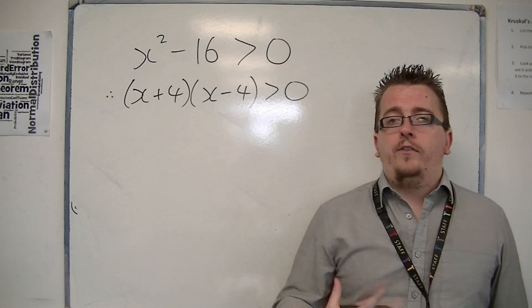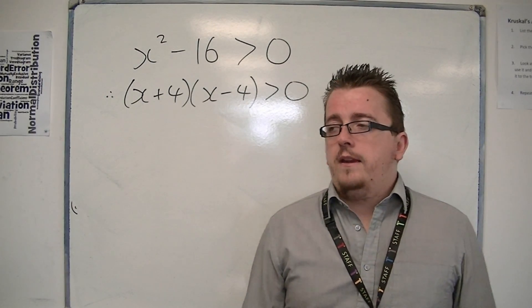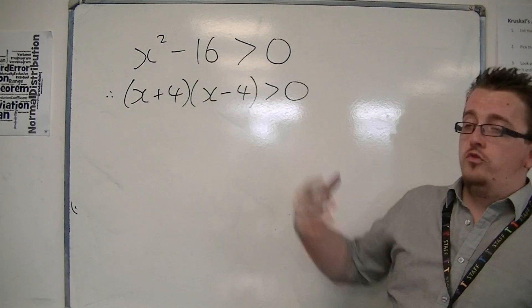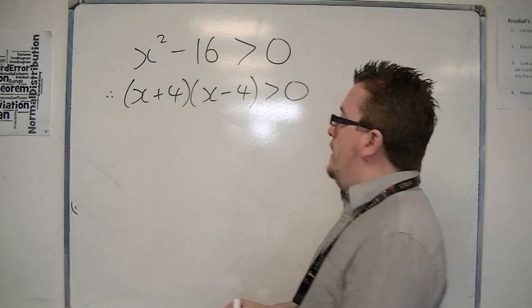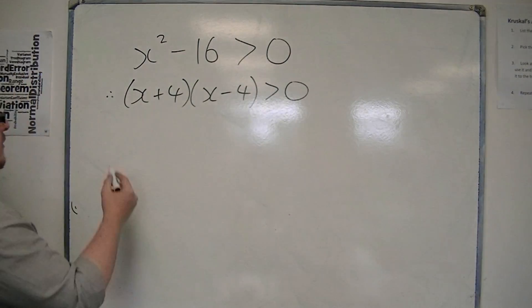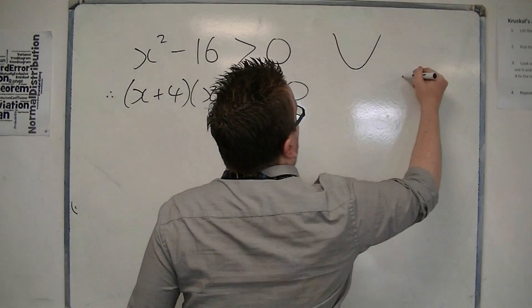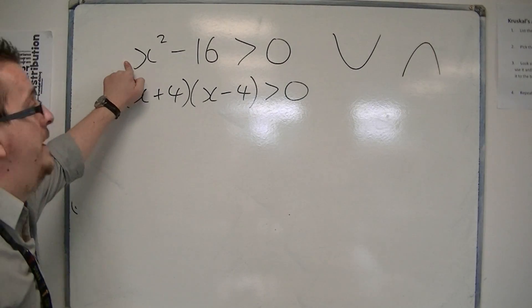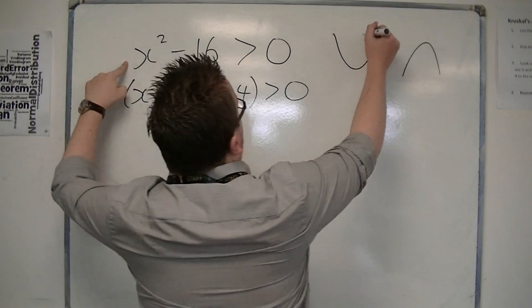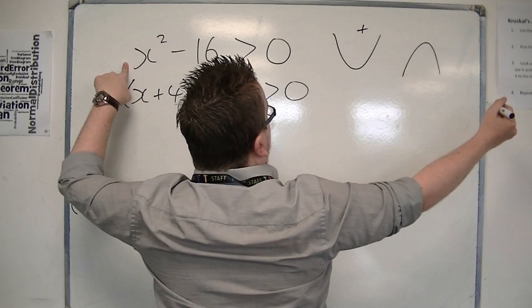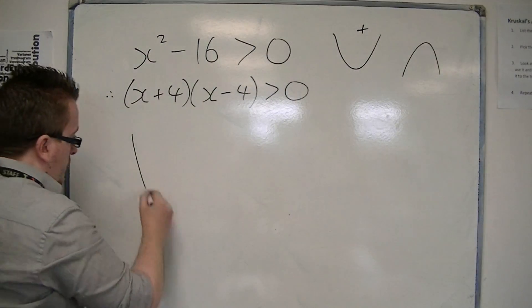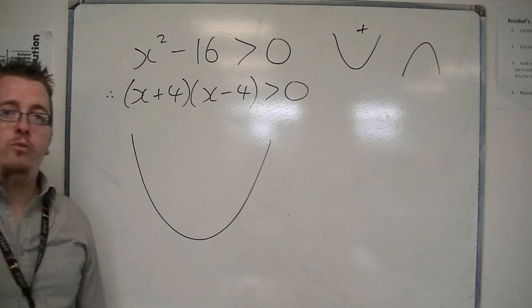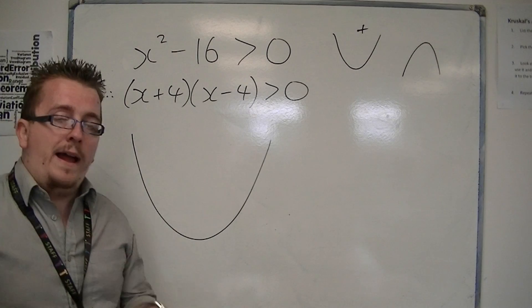In any case, you know what a parabola looks like. You know what a quadratic looks like. You know that it's either going to be a happy face or a sad face, depending on the coefficient of the x squared. And because it's positive, it's going to look like this. So, just draw yourself any old parabola. You don't even need to draw your axes.